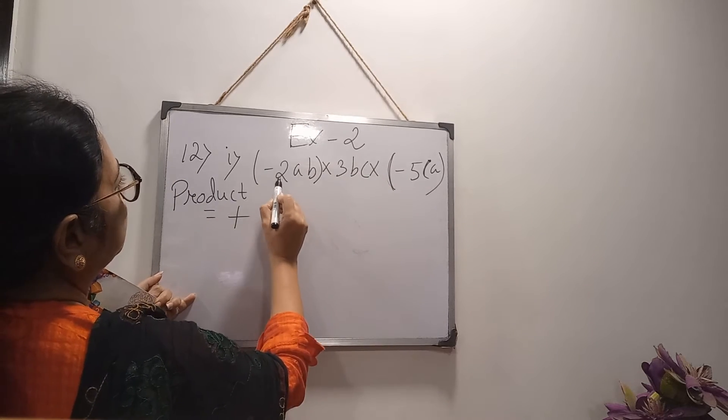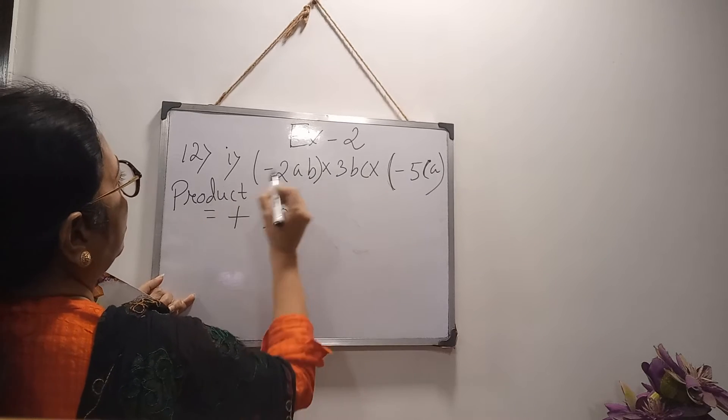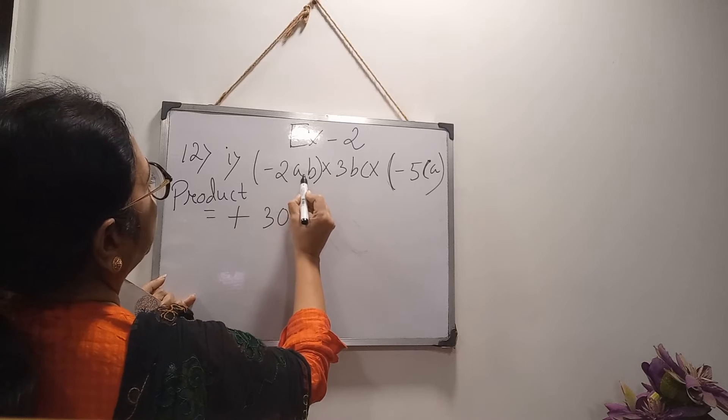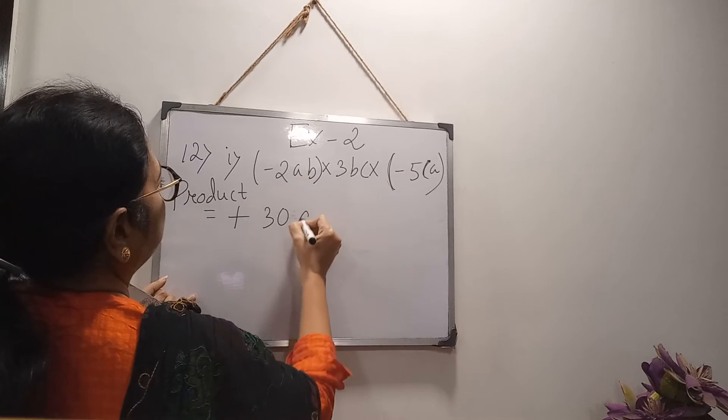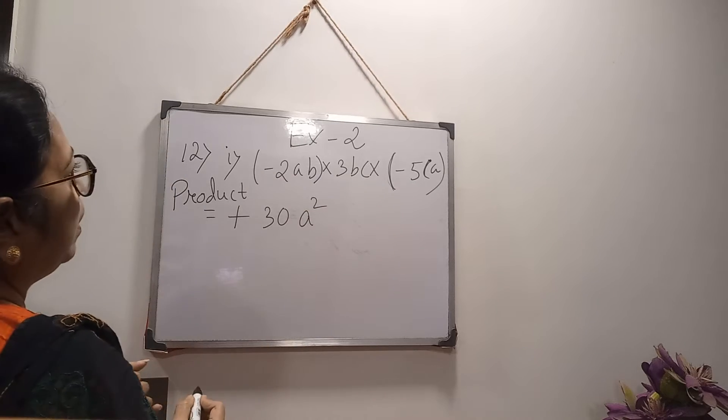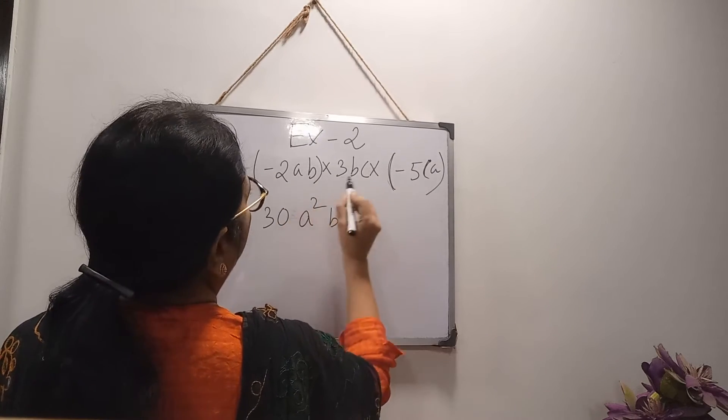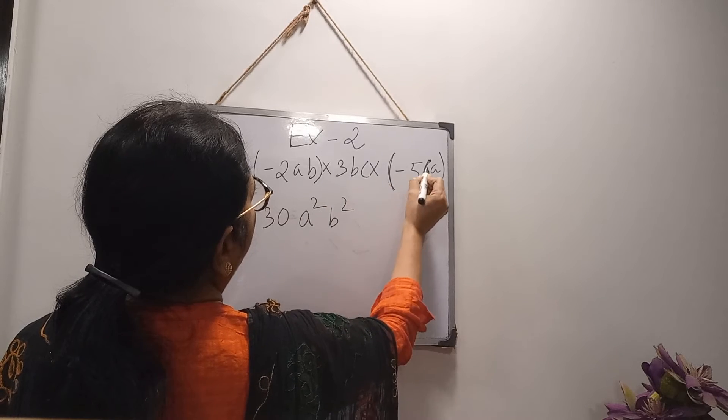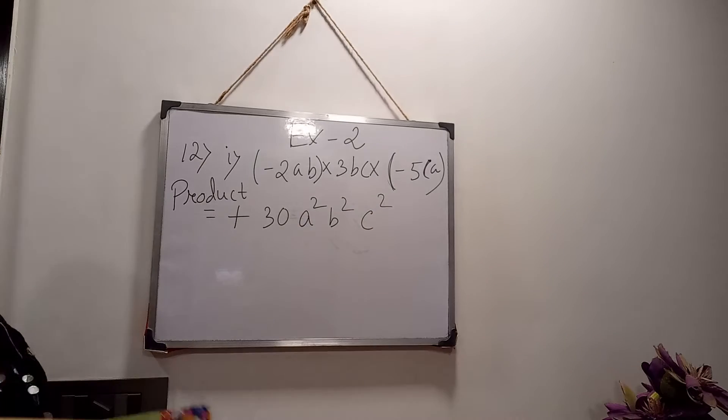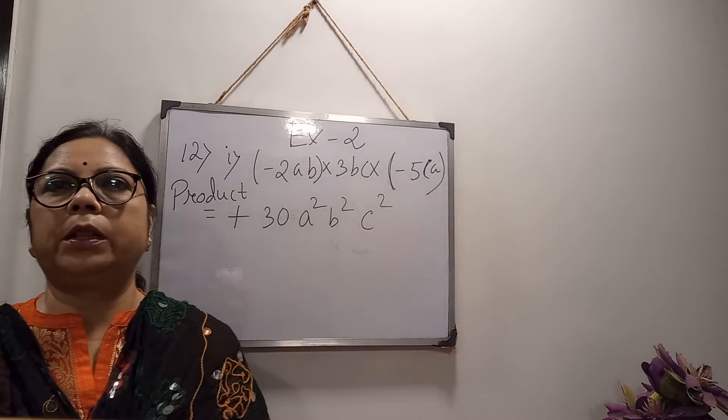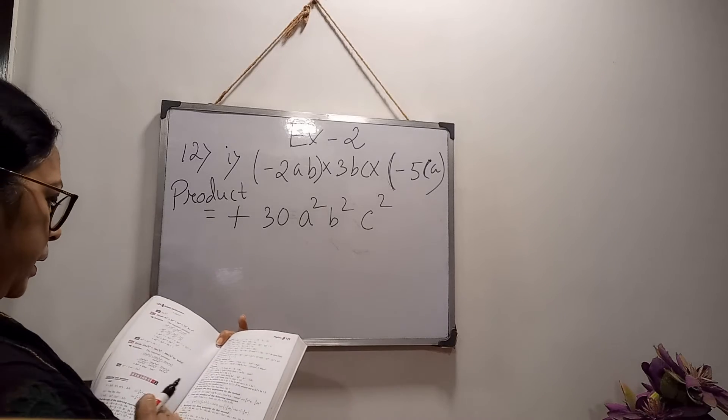Now you will multiply the numbers, 2, 3 is 6, 6, 5 is 30. And A, how many A's are there? A here, A here. A into A means A square. B, B into B means B square. And C here, 1C and there is 1C, so C square, this is the answer. So our product is coming 30 A square B square C square.